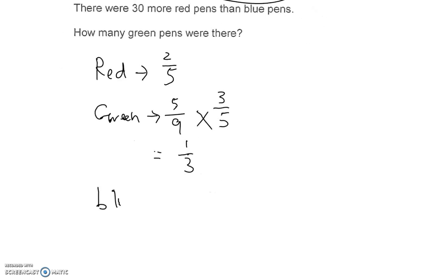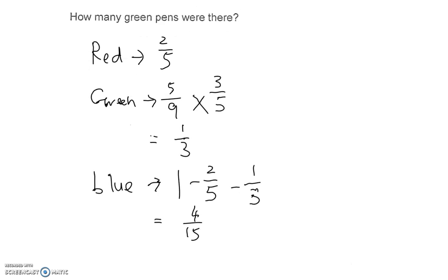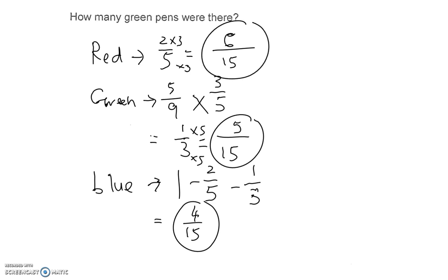And blue will be what is rest. So 1 whole minus the red minus the green gives us a total of 4/15. Okay, now this 4/15 over here is number of blue. You notice that they are all in different denominator. Very hard to compare. What we could do is to change them to the common denominator so that they are all referring to the same whole. This is for green. Let's change this to the common denominator also. This will be 6, which is for red.